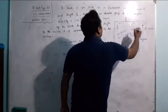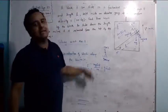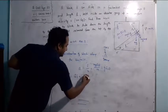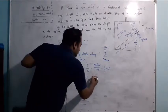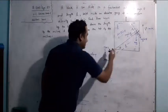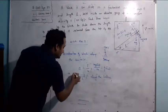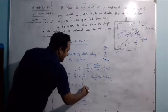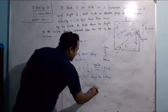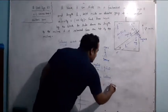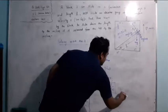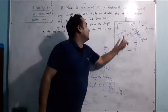So acceleration equals g sin theta along the surface. The block slides down with acceleration g sin theta as observed by Observer 2. Now applying the second equation of motion along the incline: s = ut + ½at². Here s = L, initial velocity u = 0, acceleration = g sin theta. Solving gives t = √(2L / g sin theta).